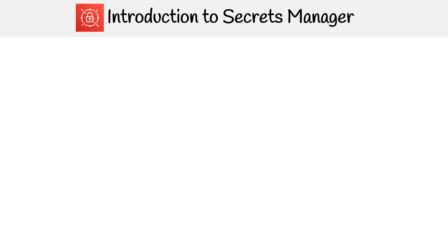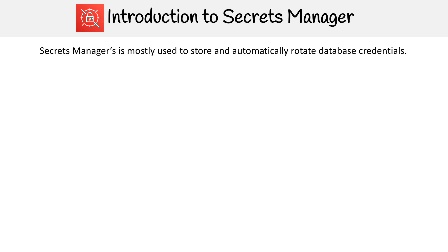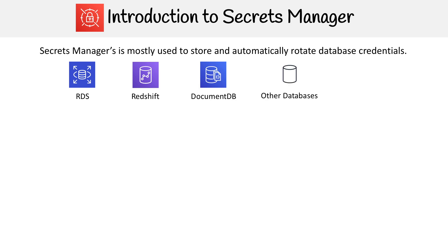For Secrets Manager, you generally want to use it to automatically store and rotate database credentials. They say they support API keys and other things, but this is really where Secrets Manager shines. The databases available include RDS, Redshift, and DocumentDB, and then there are other databases which we'll look at closely in a moment.